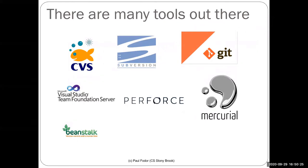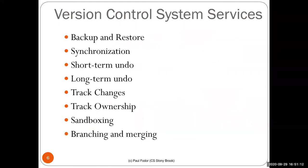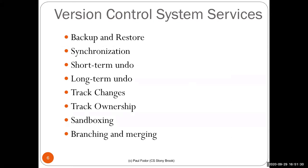There are many version control tools — this is a historical view. CVS was the main system up to about 10 years ago; Subversion was developed on Apache and had many users. Git was a game changer as a distributed version control system allowing multiple repositories. Microsoft uses Team Foundation Server. Basic VCS services include backup and restore, synchronization, short and long term undo, track changes, track ownership, sandboxing, and branching and merging.